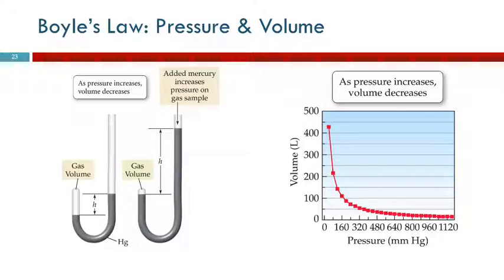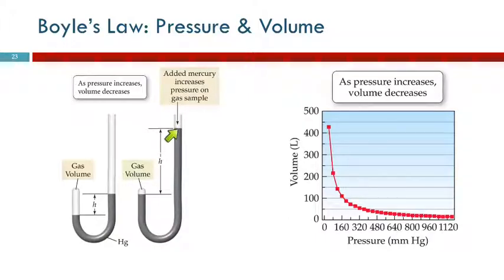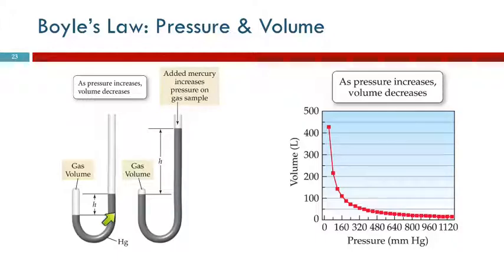When you add more mercury, the pressure increases and that's what makes the difference in heights change. There's pressure from the atmosphere and pressure from the mercury. The mercury tries to equalize but can't fill the closed end because gas is taking up space there. We're pushing that gas into a smaller and smaller space, increasing its pressure, so the difference in column heights increases.